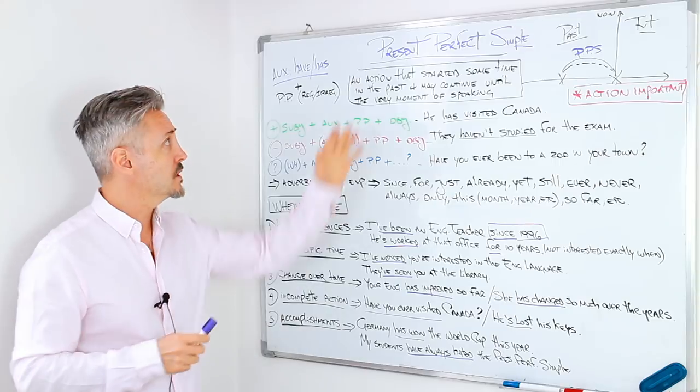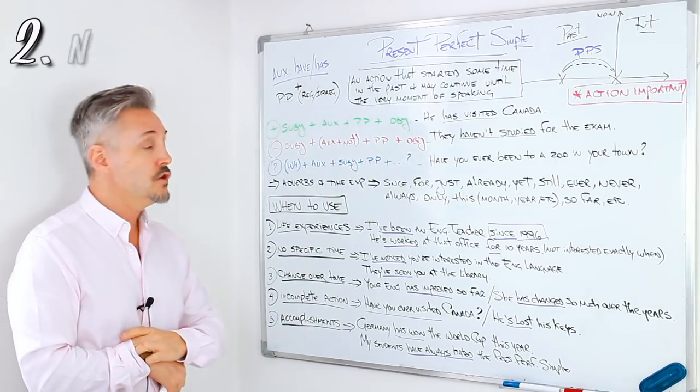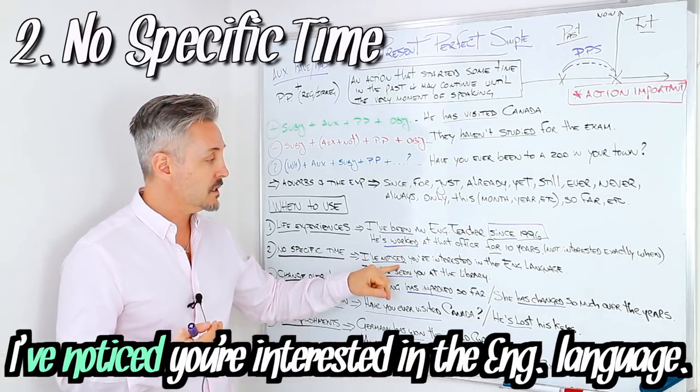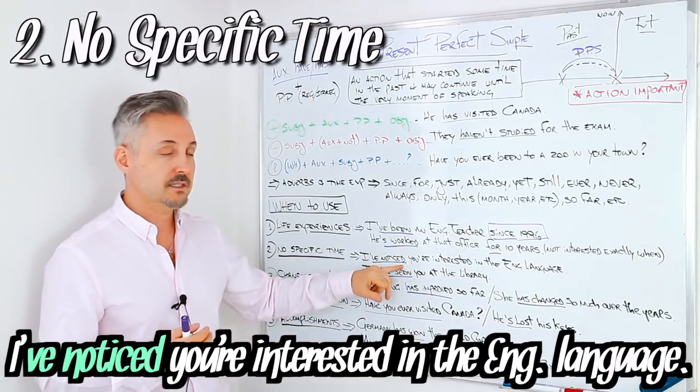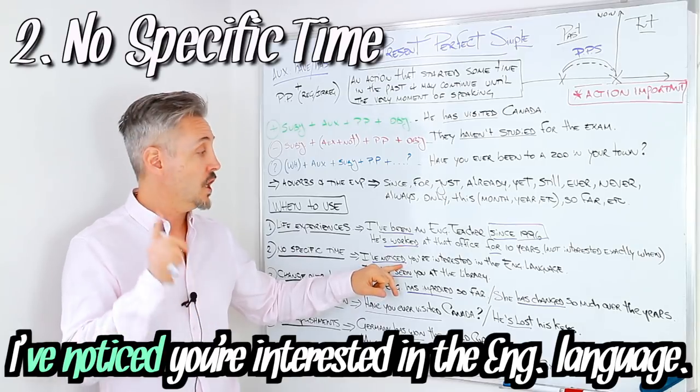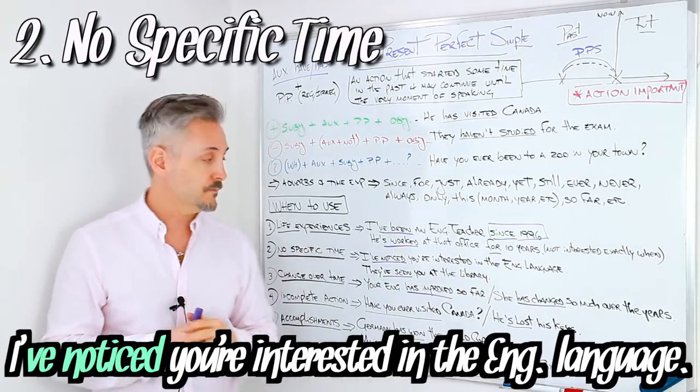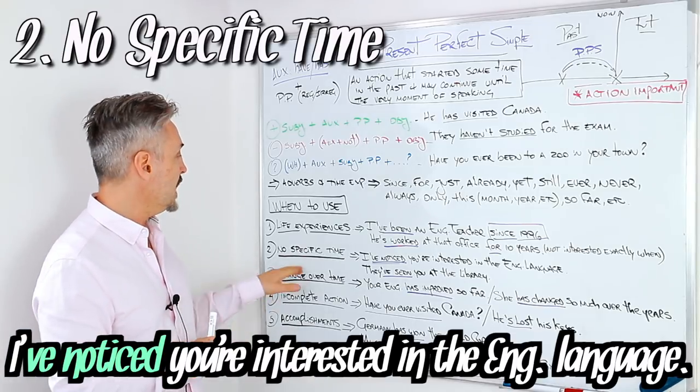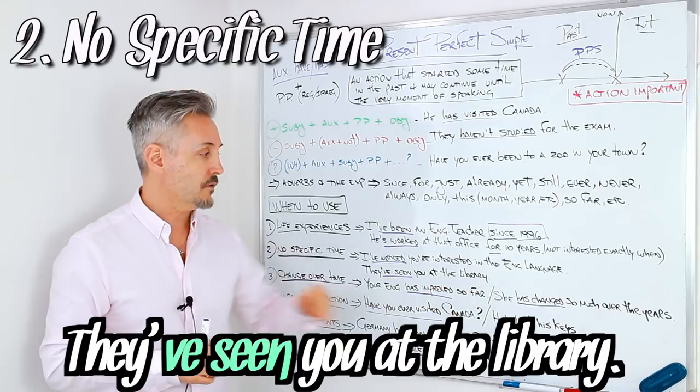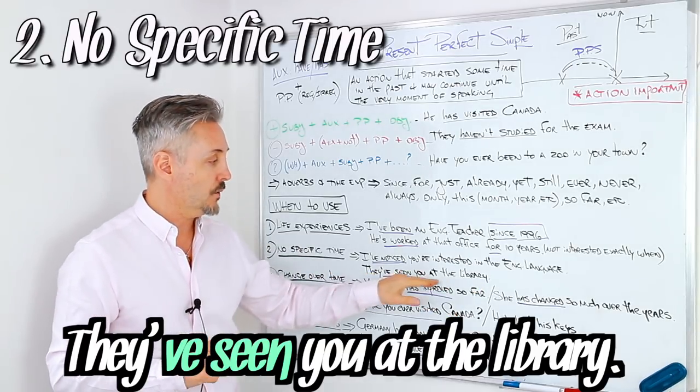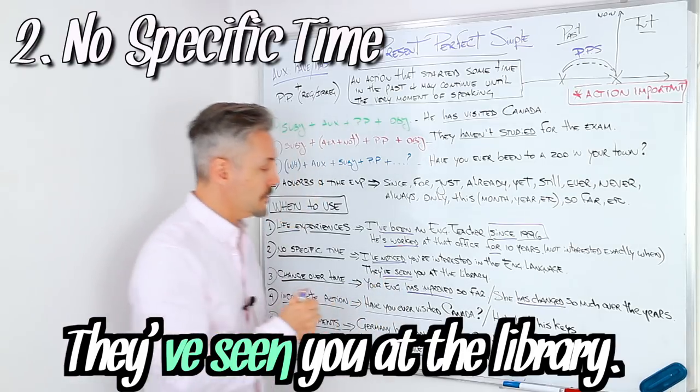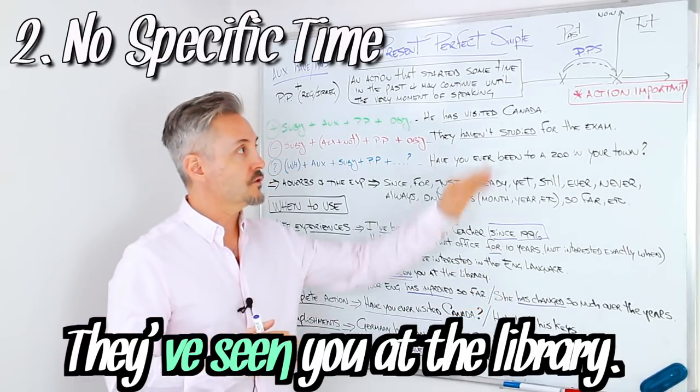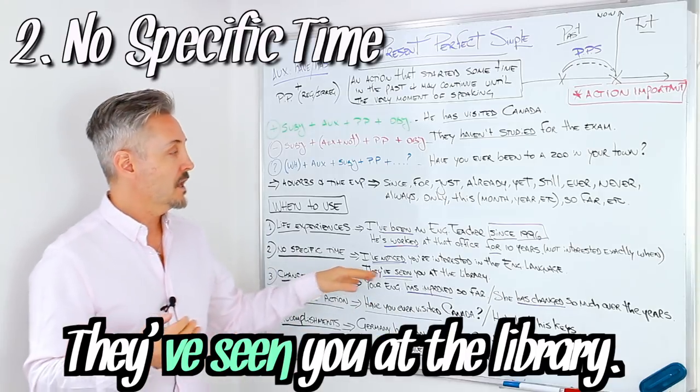The second point that we use the present perfect simple with: no specific time, when you don't indicate the time. For example, I've noticed you're interested in the English language. I've noticed, this is what is important. Right there. I've noticed is the most important part of the sentence. Now another example: They've seen you at the library. Here it's important that they've seen you at the library, not when. Obviously we're not concentrated on the time, but on the action itself.